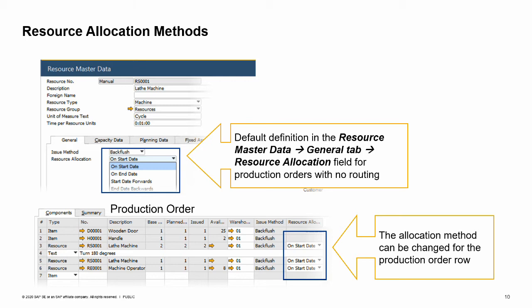There are four resource allocation methods. On start date: the entire row quantity is allocated to the start date of the row. On end date: the entire row quantity is allocated to the end date of the row. Start date forward: the committed quantity is allocated according to the available single-run capacity for each day. The system checks each day, starting from the start date, or the system date if the start date is earlier, whether the capacity can fulfill the committed quantity. If there is not enough quantity on that day, the system checks available capacity on the next day, until the entire committed quantity is allocated. If the system reaches the end date and there is still quantity to allocate, the remaining balance quantity is allocated to the start date.